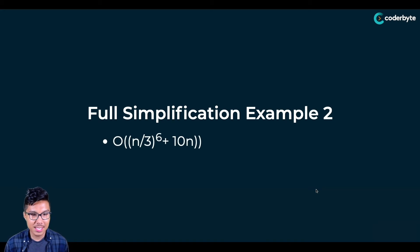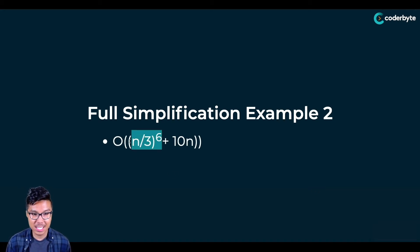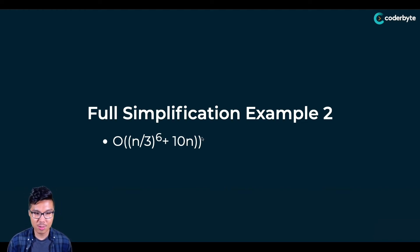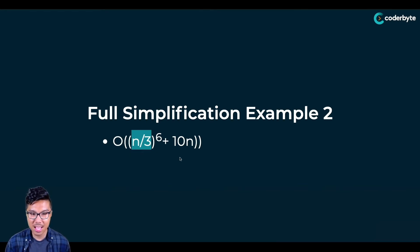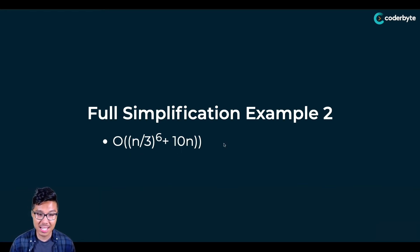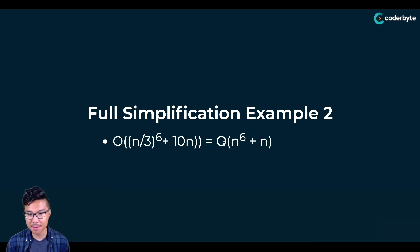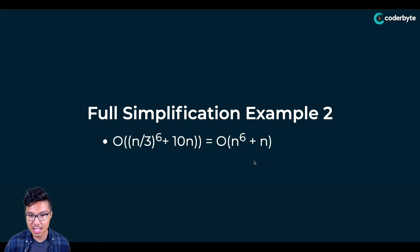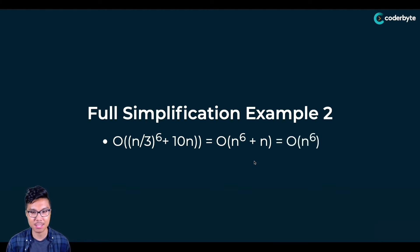Looking at another example: given n over three to the sixth power plus 10 times n, apply the product rule first. Simplify n over three to just n, and simplify 10n to just n. That gives n to the sixth plus n. Then choose the bigger term among these two, giving a final answer of O of n to the sixth power.